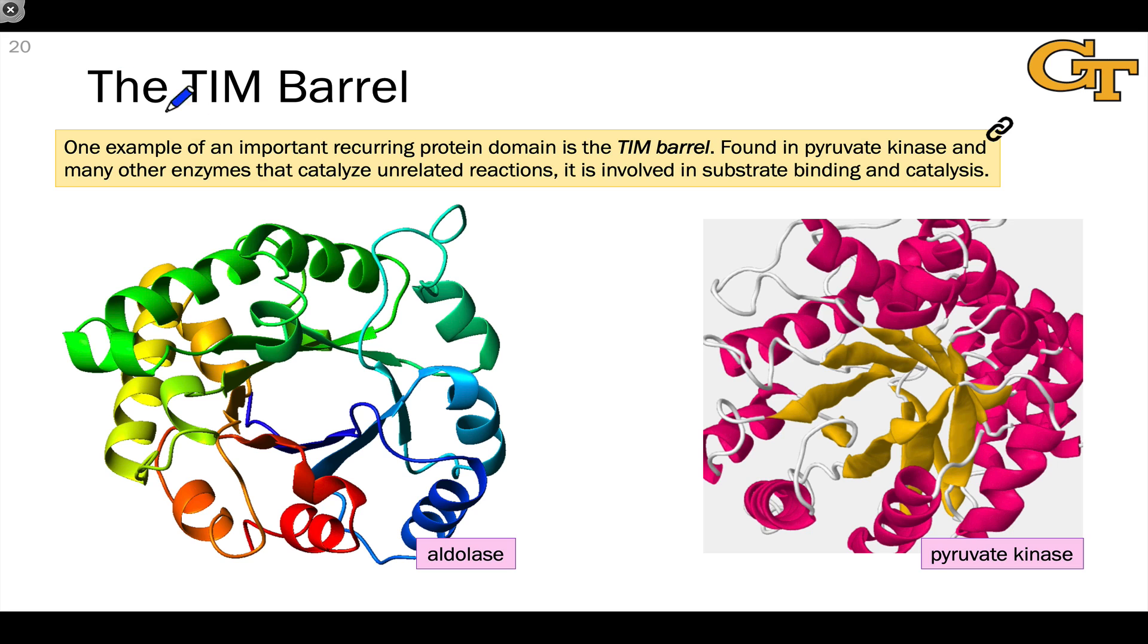Just to highlight one example of a specific domain, I wanted to take a look at the TIM barrel. The TIM barrel domain is named for the triose phosphate isomerase enzyme, which is important in glycolysis and is found in a huge variety of organisms, but this TIM barrel structure with a barrel-like structure of beta sheets or beta strands surrounded by alpha helices is found in a number of different enzymes and interestingly often involves a variety of different amino acid sequences. It's not really associated with a conserved primary sequence of amino acids.